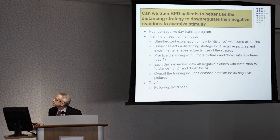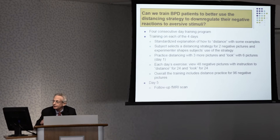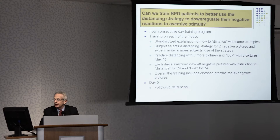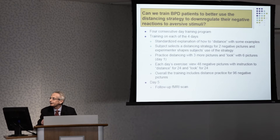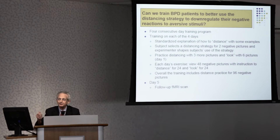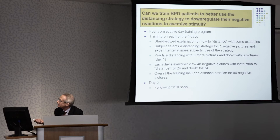After we did this study, we wanted to see whether we could actually train borderline patients to use distancing more effectively. We developed a four-day training program where subjects would come in, we'd get a baseline fMRI image, and then we would train them each of four days by having them look at these pictures with our research coordinators — Antonia McMaster and Maria Lopez — who sat down with the subjects, had them practice distancing, shaped their behavior, and had them distance for 24 pictures and look for another 24 each day. So they practiced distancing for 96 pictures total, and then we brought them back and imaged them again.